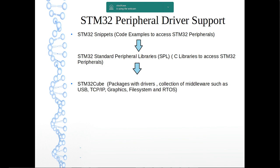Later, ST came up with STM32 Cube, which not only provides peripheral libraries but also middleware on top of that — such as USB stack, TCP/IP stack, graphics, file system, and RTOS. To ease development and improve time-to-market, they also came up with a graphical tool. This overall package is called STM32 Cube.